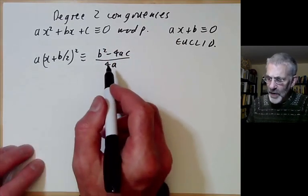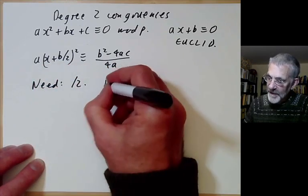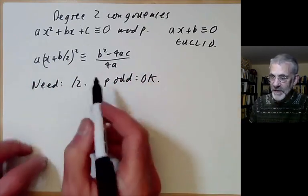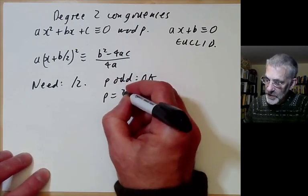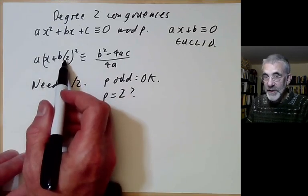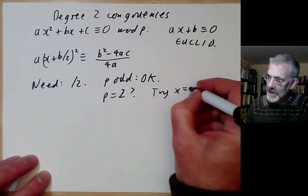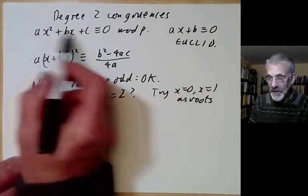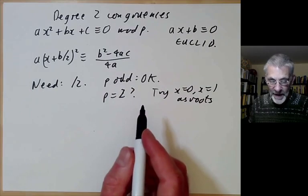There's a little bit of a problem here because we need to be able to divide by 2. If p is odd, this is okay because 2 is coprime to p so we can divide by it. If p equals 2, we can't do this, but we can just try x = 0 and x = 1 as roots — it's very easy to do by trying all possible cases. So we may as well assume that p is odd.